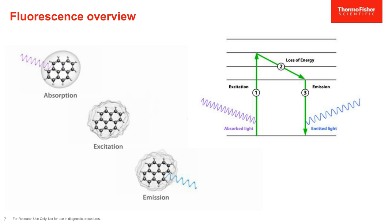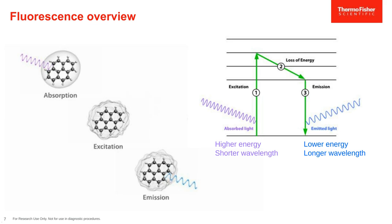A fluorophore is a molecule that is capable of fluorescing. In its ground state, the fluorophore is in a stable configuration and does not fluoresce. When light from an external source, such as a laser, hits a fluorophore, the molecule absorbs the light energy. When the energy absorbed is sufficient, the molecule reaches a higher energy state called the excited state — this process is called excitation. The fluorophore then rearranges from this semi-stable excited state back to the ground state, and with this, excess energy is released and emitted back as light.